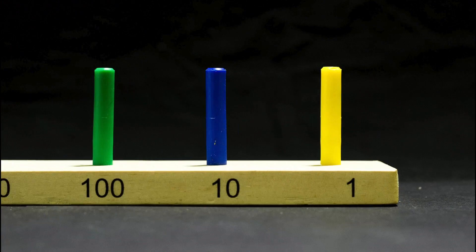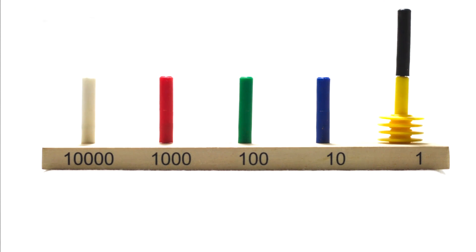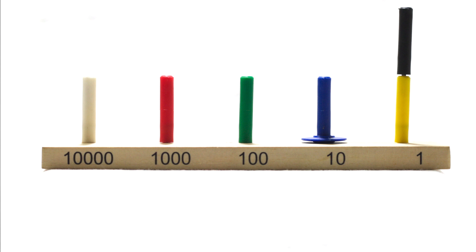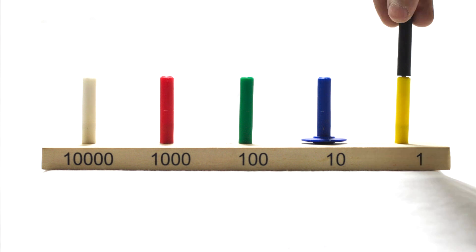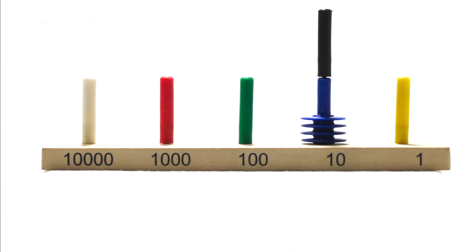The abacus is very useful in subtracting five digit numbers. Students must observe that the rods on the abacus are designed to hold only nine rings. An add-on rod is provided to help count beyond nine. As per the rule of grouping by 10, 10 yellow rings have to be replaced by a blue ring which represents 10 and moved one place to the left.